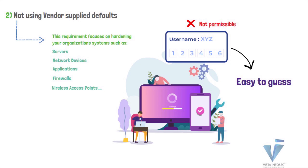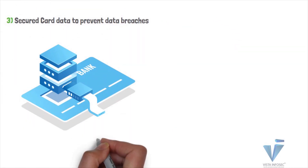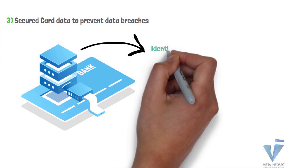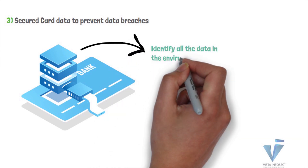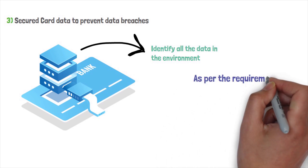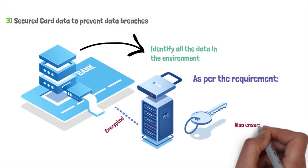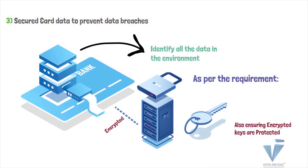Requirement 3, which is to protect stored cardholder data, requires businesses to secure stored sensitive card data to prevent any sort of data breaches. For this, they must identify all the data in the environment and the locations in which they are stored. Organizations must also define the retention period for storing such sensitive data. As per the requirement, the stored card data must be encrypted while also ensuring the encryption keys are also protected.